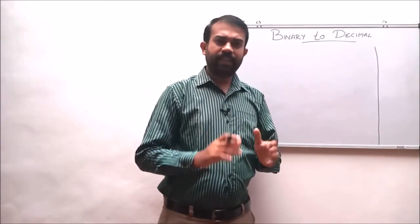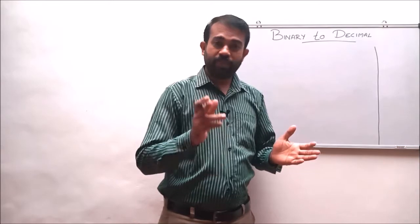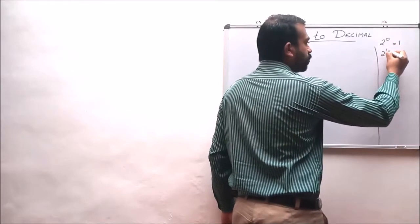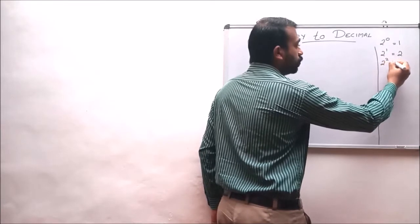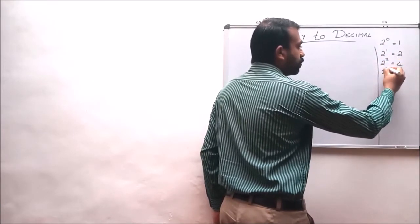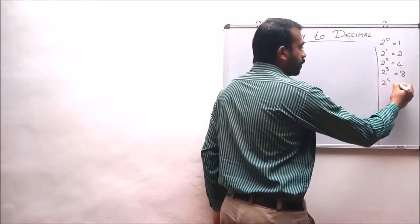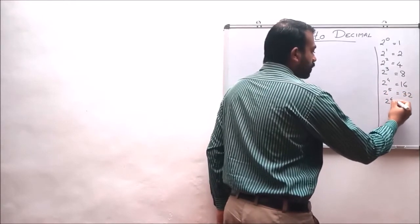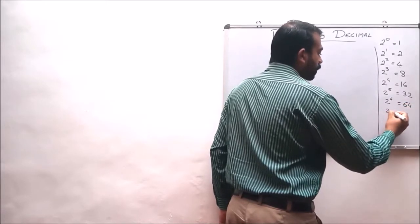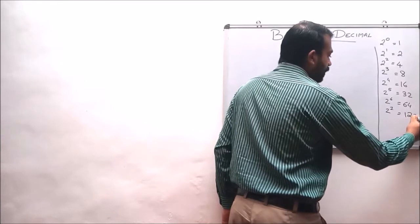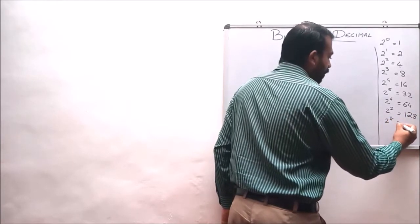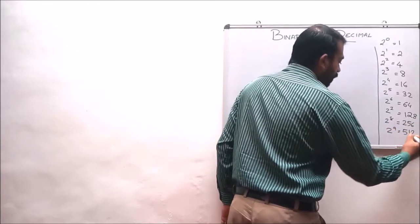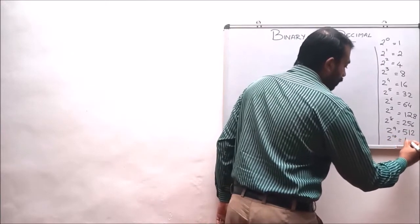Before going to the next example, let us consider some power values of 2. As we know: 2 raised to 0 is 1, 2 raised to 1 is 2, 2 raised to 2 is 4, 2 raised to 3 is 8, 2 raised to 4 is 16, 2 raised to 5 is 32, 2 raised to 6 is 64, 2 raised to 7 is 128, 2 raised to 8 is 256, 2 raised to 9 is 512, and 2 raised to 10 is 1024.